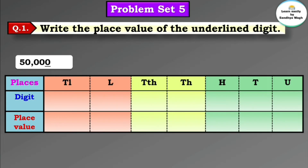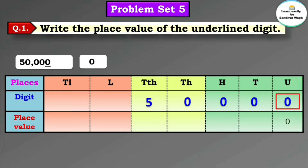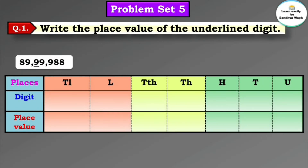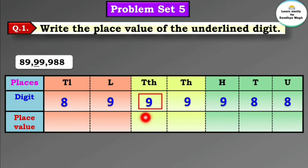Next number is 50,000 and the underlined digit is 0. We have to find out the place value of this 0, which is in the units place, so the place value of this 0 is 0. Next question: 89,99,988 and the underlined digit is 9. Let's arrange this number according to their places. The underlined 9 is in the 10 thousands place, so the place value of this 9 is 90,000.